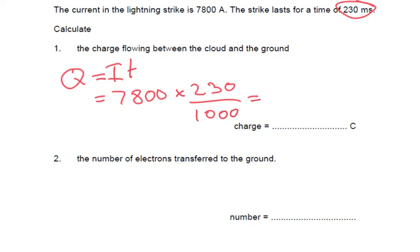So how much charge flowed? We get 7800 times 230 divided by 1000, and we get 1794 coulombs.